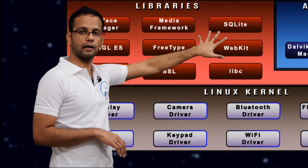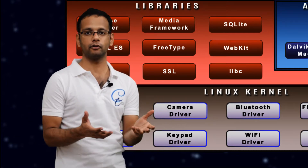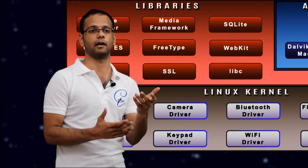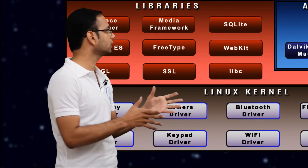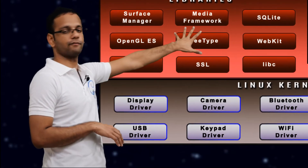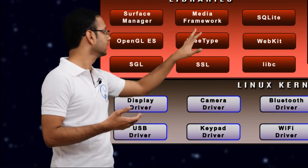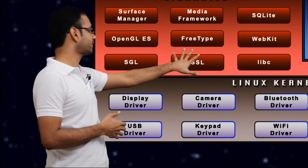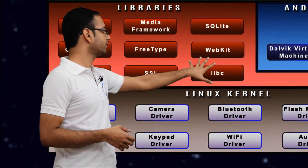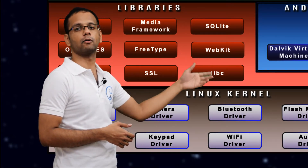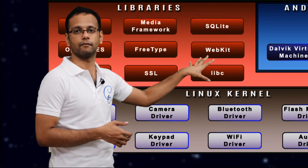Then we have Webkit, which has all the libraries for your internet browser — HTML parsing and deparsing. For example, whatever browser you use on your mobile phone, it has to first render HTML to display to the user, and if the user does something, it converts the HTML frames back to the lower-level HTTP format. All these things are implemented in Webkit. Then we have the FreeType font library — similar to TTS fonts in Windows — for font rendering in Android. We have SSL, the Secure Socket Layer, which handles encryption and decryption of data during internet connectivity. And libc is a custom C library developed by Google for lower-level compilation work — it is not a standard C library like the one in Linux.